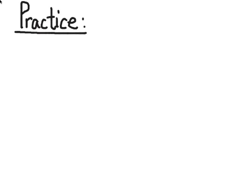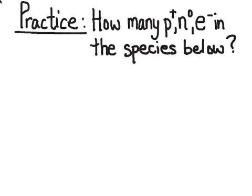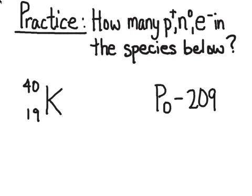Let's do some practice — finding how many protons, neutrons, and electrons are in two species. If you find it helpful to work without seeing the answer right away, pause the video now, work out the answer, then unpause to check with me. The two species we're looking at are potassium-40 and polonium-209. Potassium-40 is written as shown previously, while polonium-209 is written a little differently — see if you can dissect it and determine the number of protons, neutrons, and electrons.